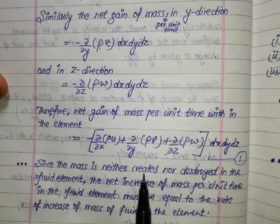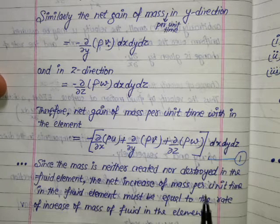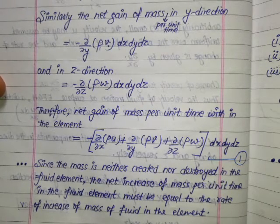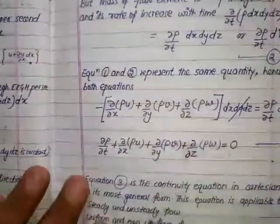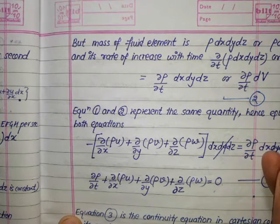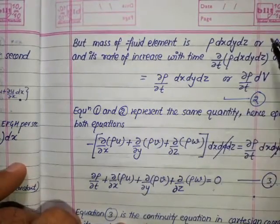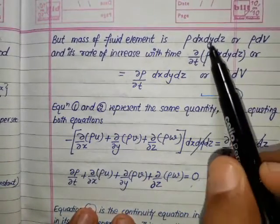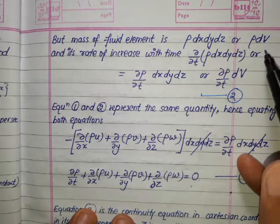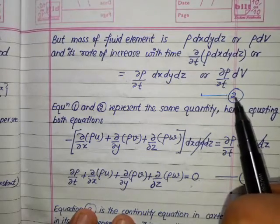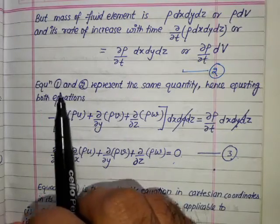Since mass is neither created nor destroyed in the fluid element, the net increase of mass per unit time must equal the rate of increase of mass within the element. The mass of the fluid element is ρ·dx·dy·dz = ρ·dV. Its rate of increase with respect to time is (∂ρ/∂t)·dx·dy·dz. This is equation 2.